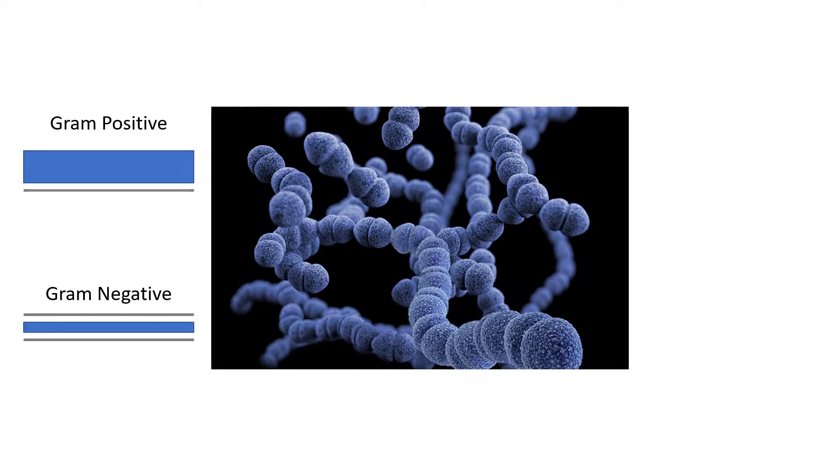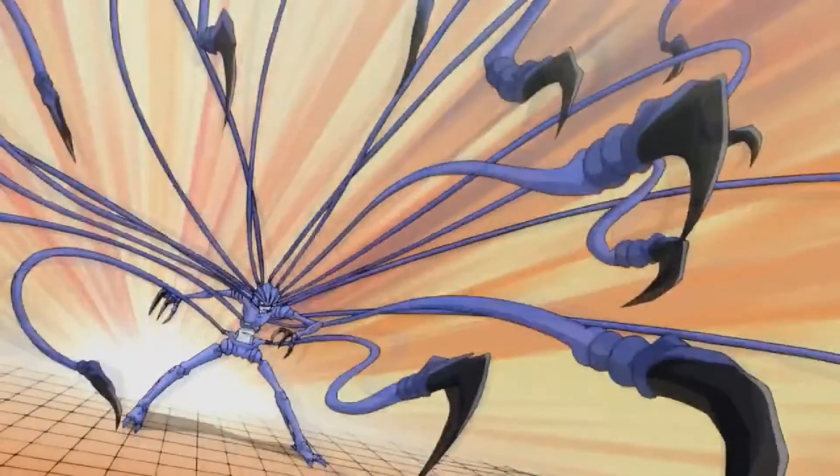Gram negatives, on the other hand, have thin cell walls sandwiched between two membranes. It is lancet shaped, which might be the inspiration for the artistic style of pneumococcus to have blades on its appendages.